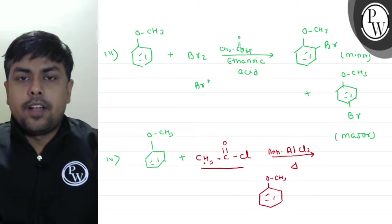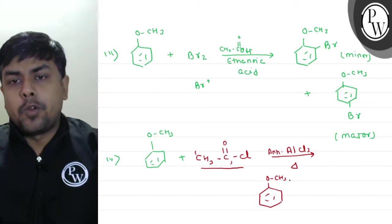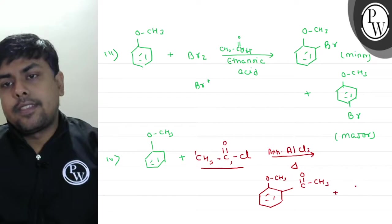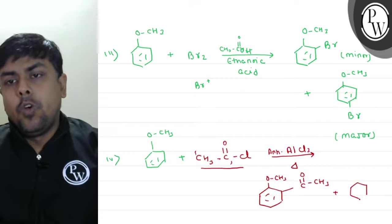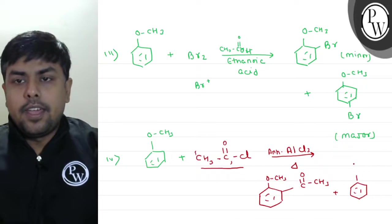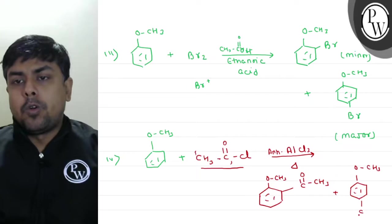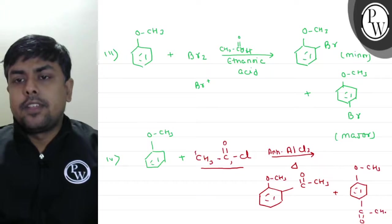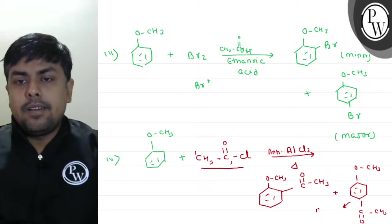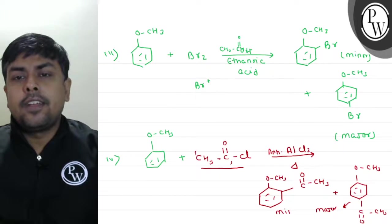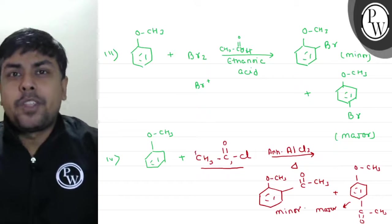O-C-H-3. My electrophile will be C-H-3, C double bond O. So it will attach here: C double bond O, C-H-3. Plus, O-C-H-3, and I will have C double bond O, C-H-3. Again, this is my major and this is minor. I hope you understood the question.